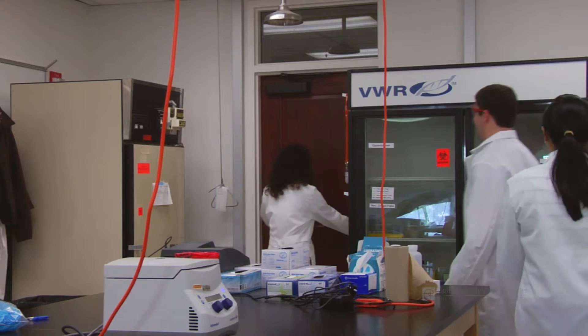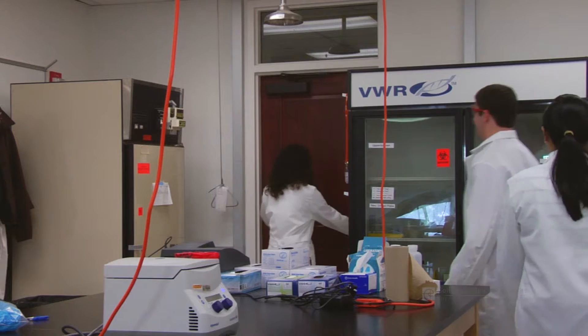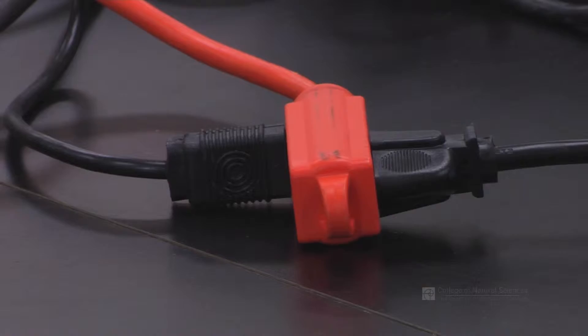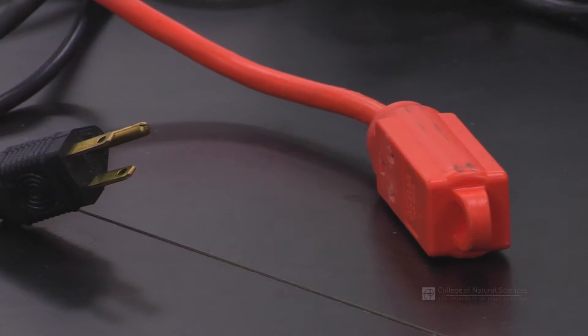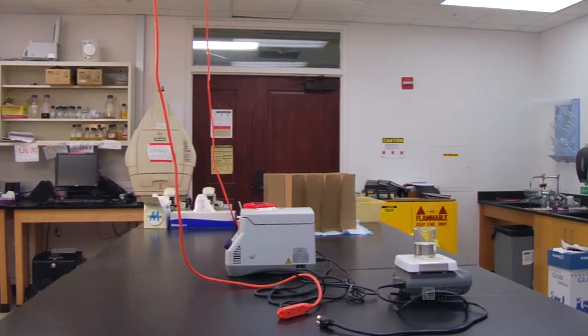Evacuate the area if the fire cannot be extinguished or if you do not feel capable to do so. Unplug all hazardous lab equipment if it is safe. Alert others in the area of the situation. Close the lab door behind you to prevent the spread of fire and smoke and pull the fire alarm. Follow the planned evacuation route and exit the building.